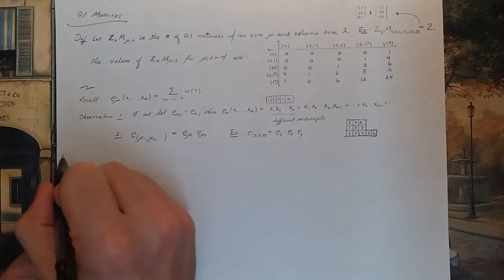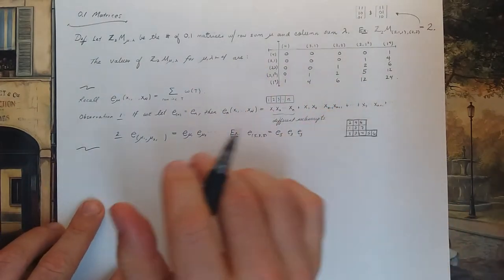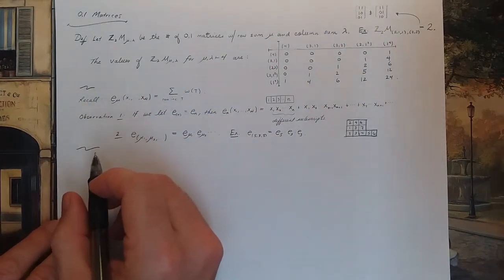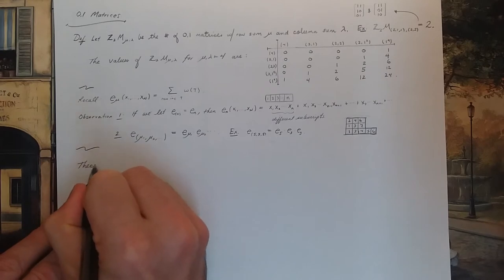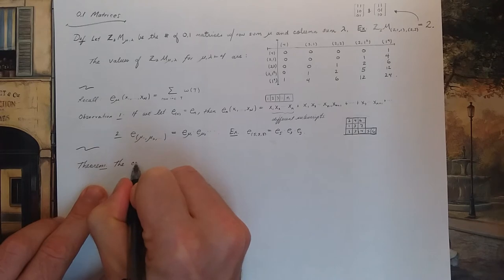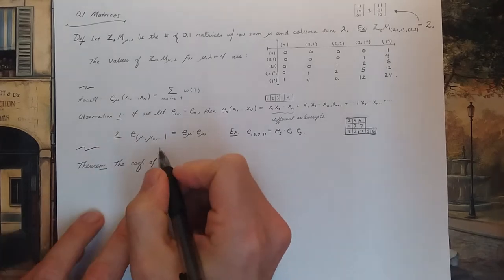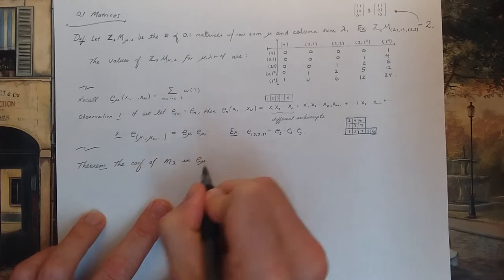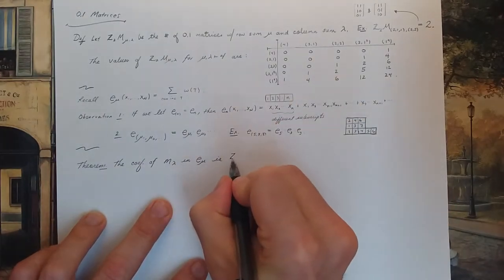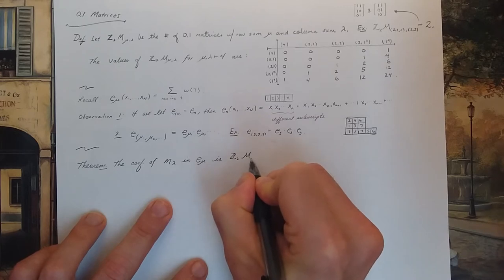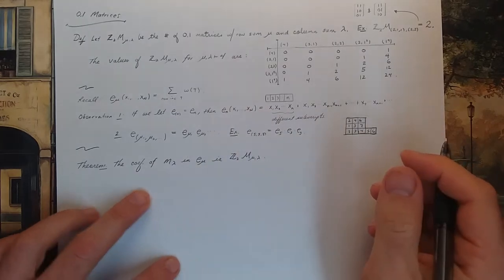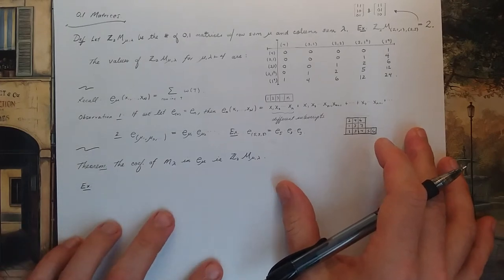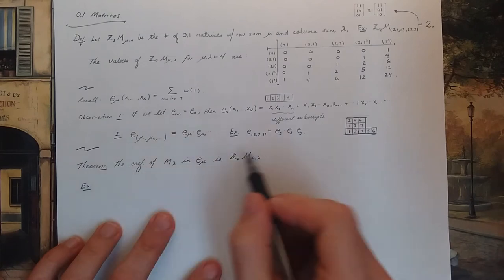Those are my two observations, and here is the main theorem. It relates the elementary symmetric polynomials and the 0,1 matrices: the coefficient of the monomial symmetric function m_λ in the elementary symmetric function E_μ is the number Z2M(μ,λ). I won't prove this formally — instead I'll do an example, through which it will be absolutely clear why the theorem is true.